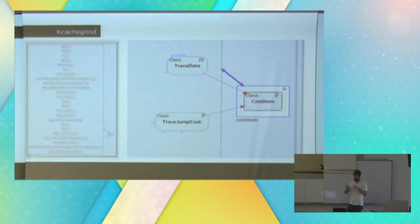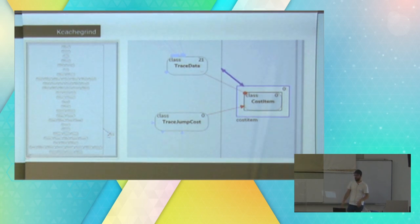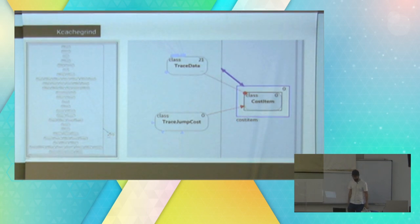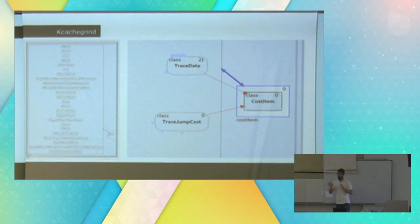For this particular case, I opened the component and started understanding why there was a cycle between two components. I came down to the logical level, where you have many classes in this particular component. When you open the CPP file, in this particular case, you have many, many classes — thousands of lines of code with many, many classes.